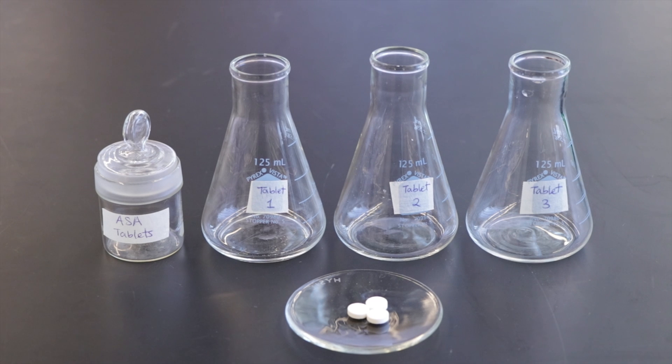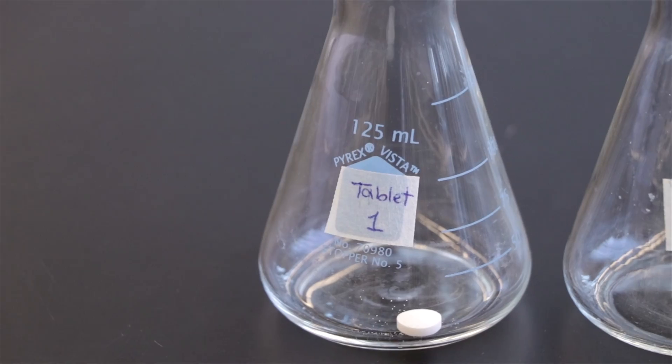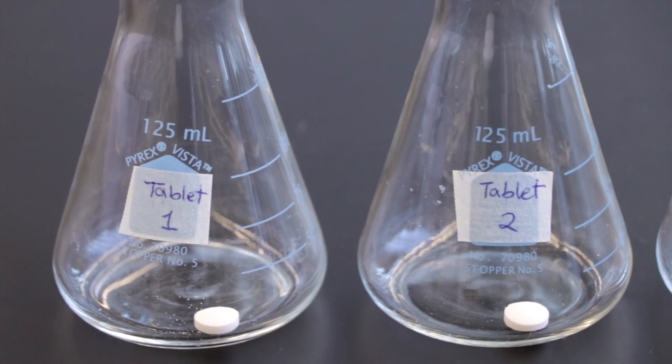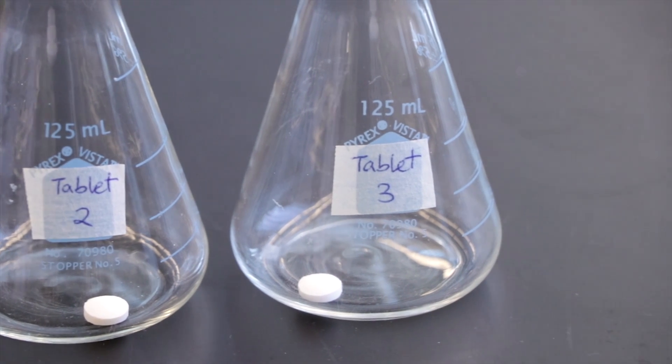Begin by accurately weighing by difference three aspirin tablets. This is the equipment you should bring with you to the analytical balance room. Weigh each tablet individually and transfer to a labeled 125 ml Erlenmeyer flask.